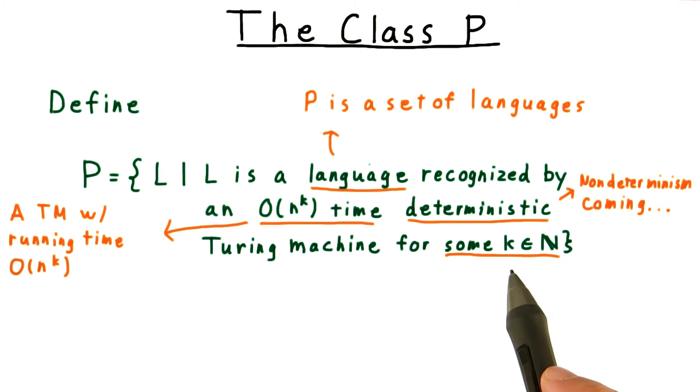Perhaps the most interesting thing about this definition is the choice of for any k in the natural numbers. Why is this the right definition? After all, if k is 100, then deciding the language isn't tractable in practice.